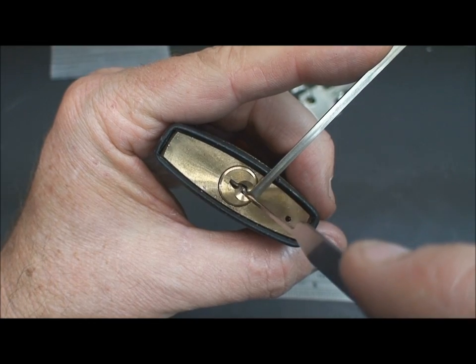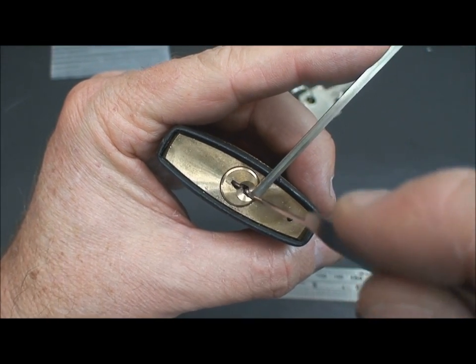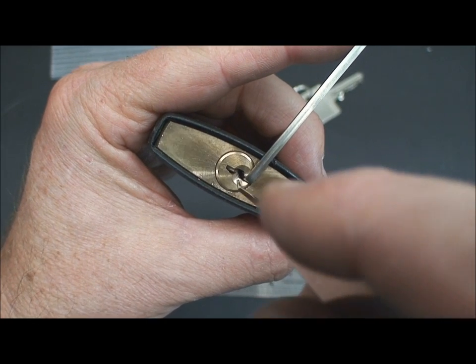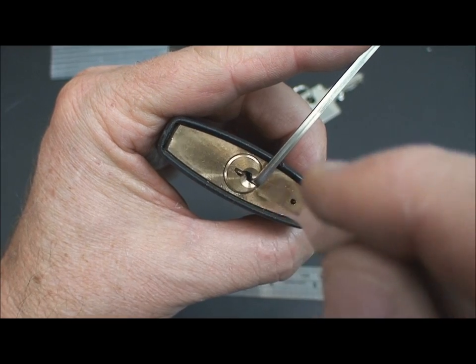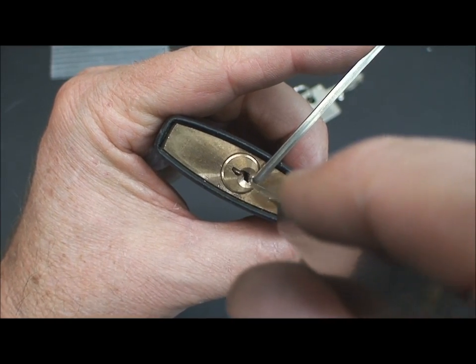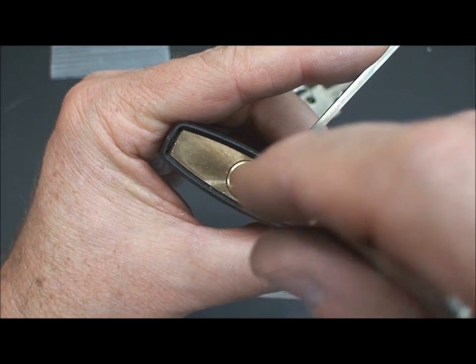We're still screwed. We still can't access those pins from directly below. So what we have to do is put our pick end sideways through this slot here, and then we kind of roll it, and just like picking dimples, we've got to roll it and figure out if the pin is binding or not, or if it's giving feedback or not.